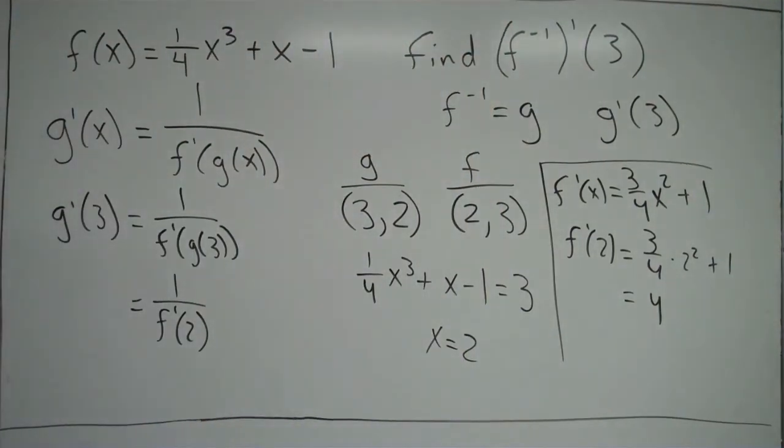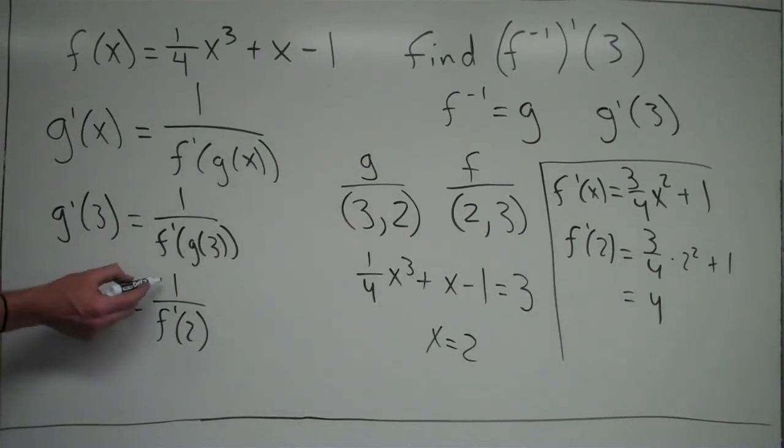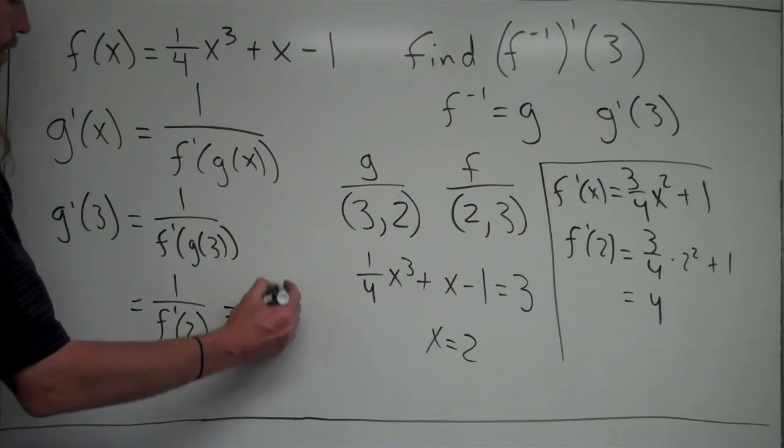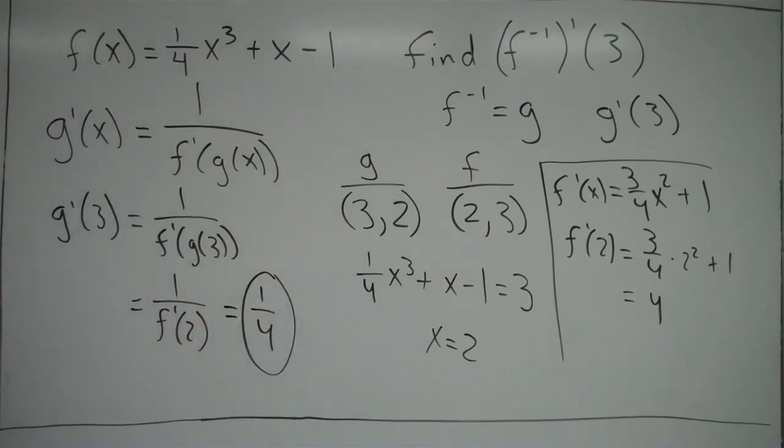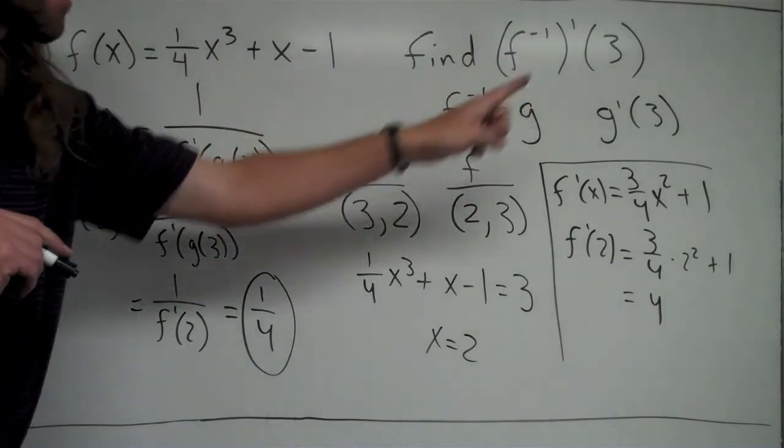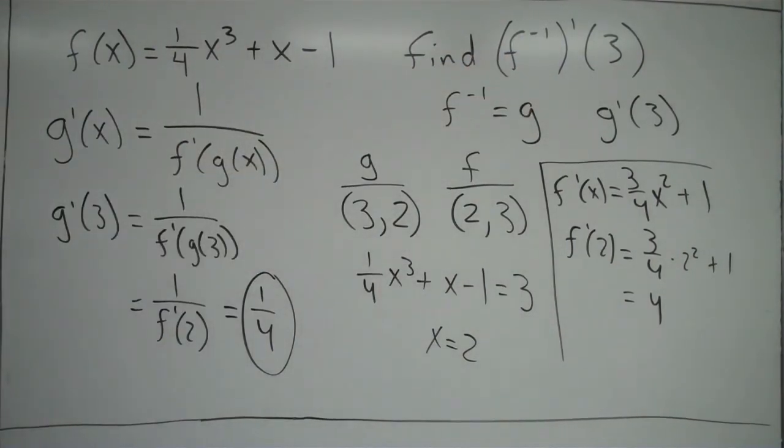Now the most common mistake that I see is people just putting, therefore, the answer is 4 and circling it. But look, it's actually 1 over f prime of 2, so the answer is actually 1 over 4. That is the answer right there. So what we've come up with is that the derivative of the inverse of f at 3 is equal to 1 fourth. Kind of a strange thing, but that's what we found out.